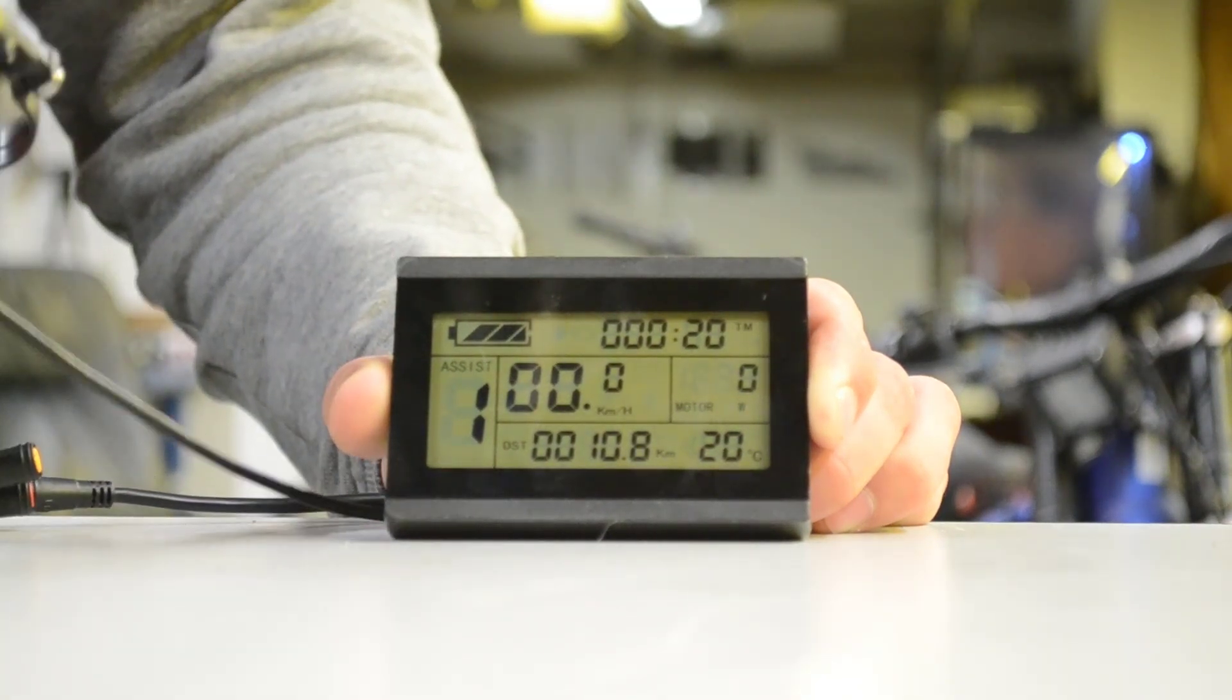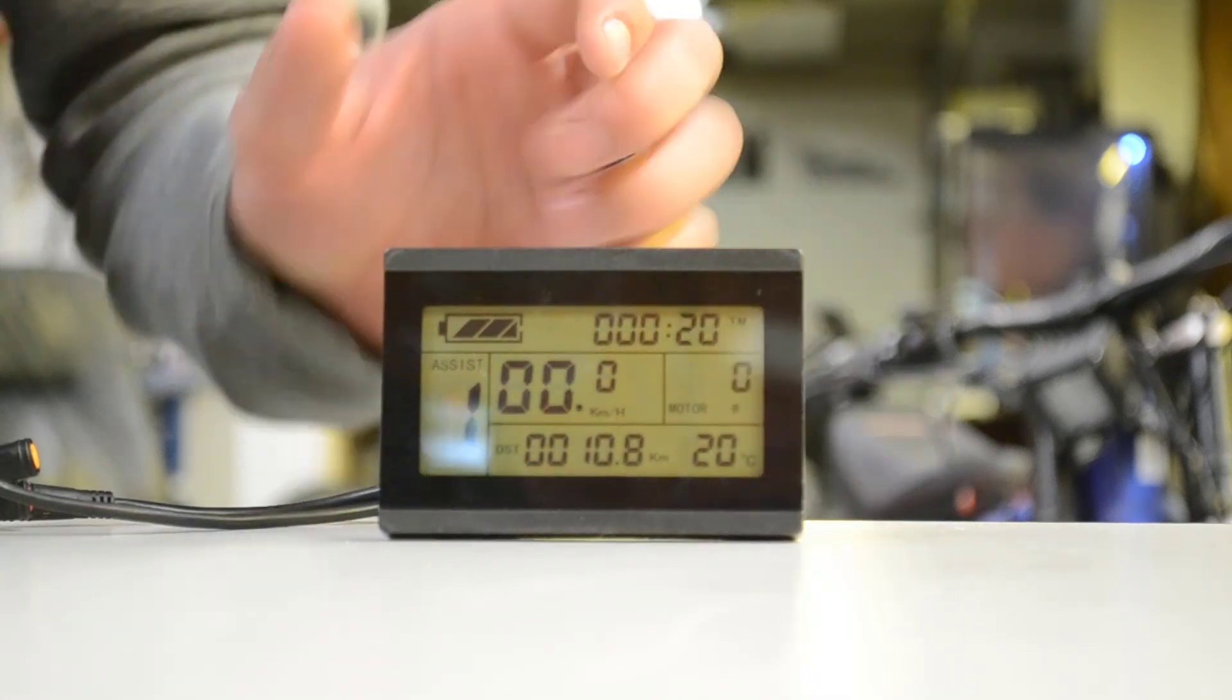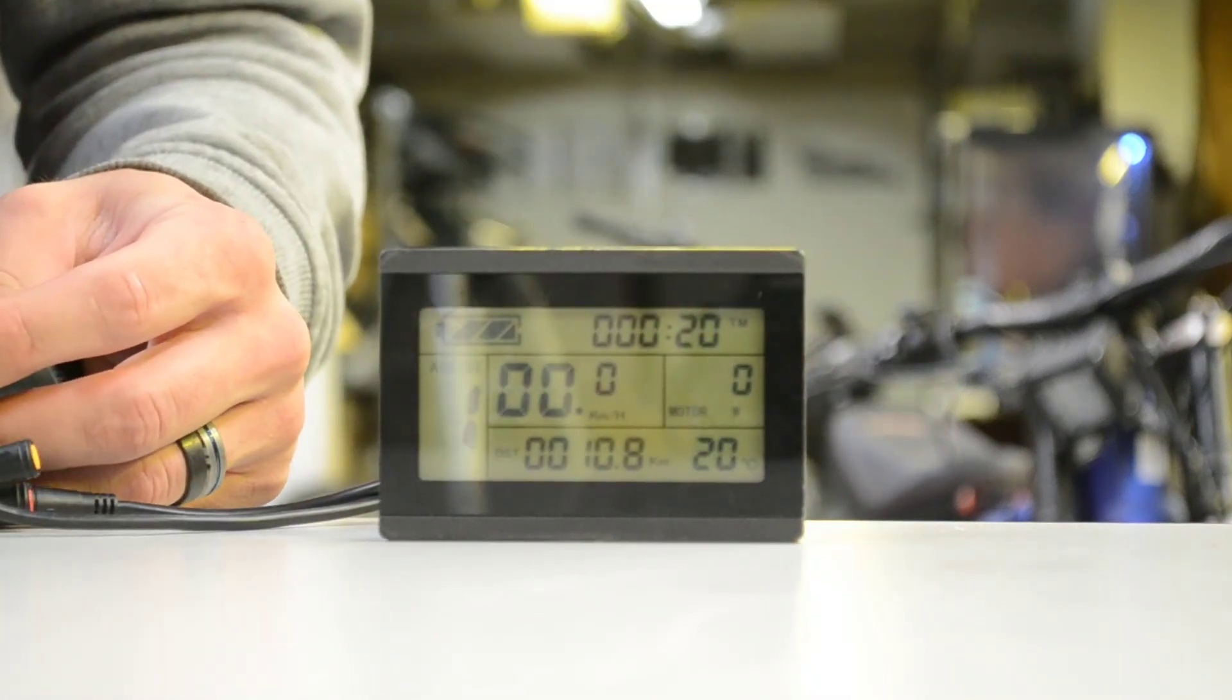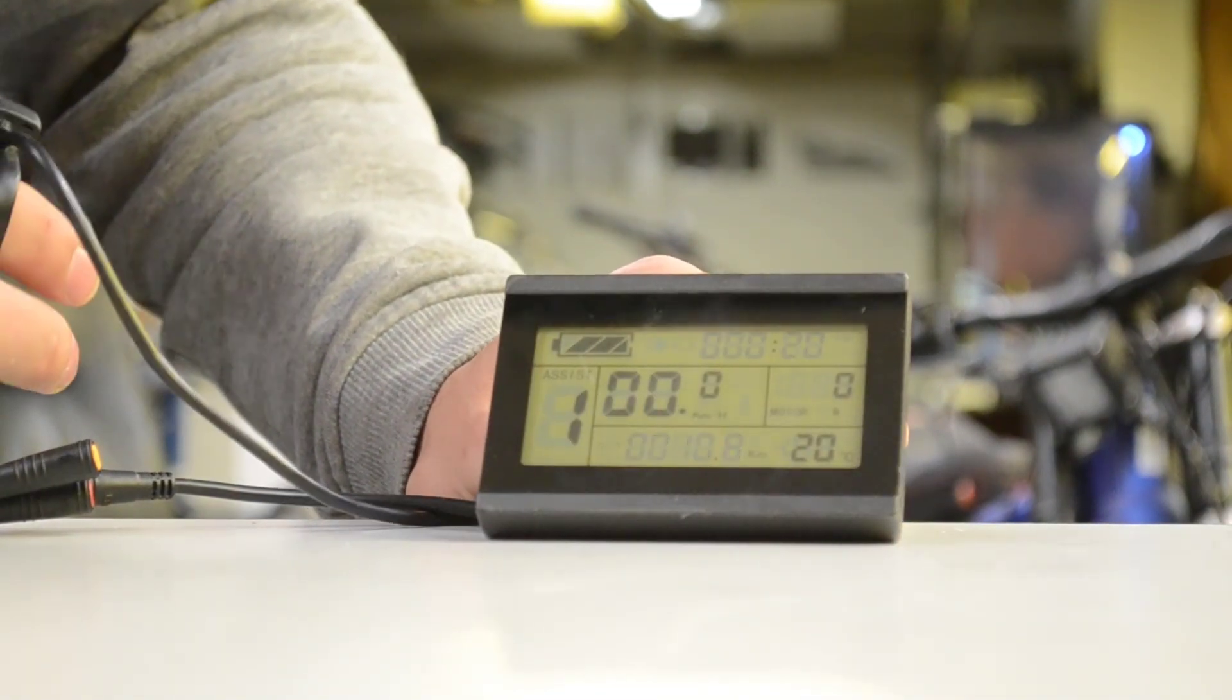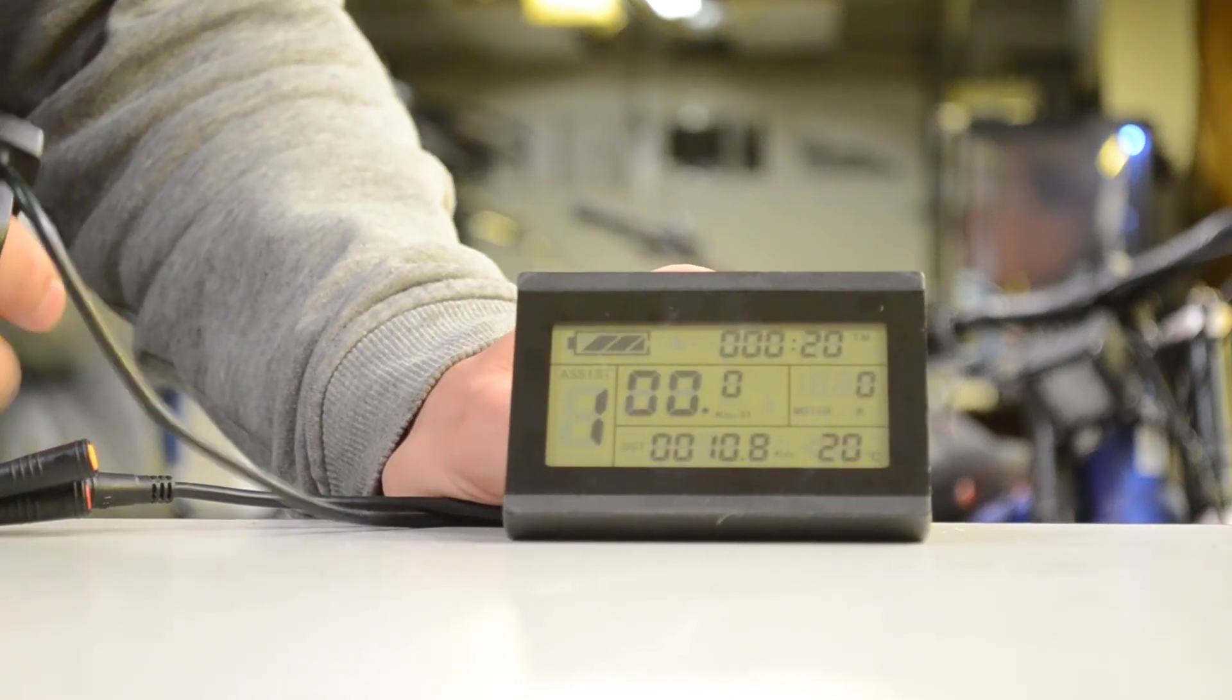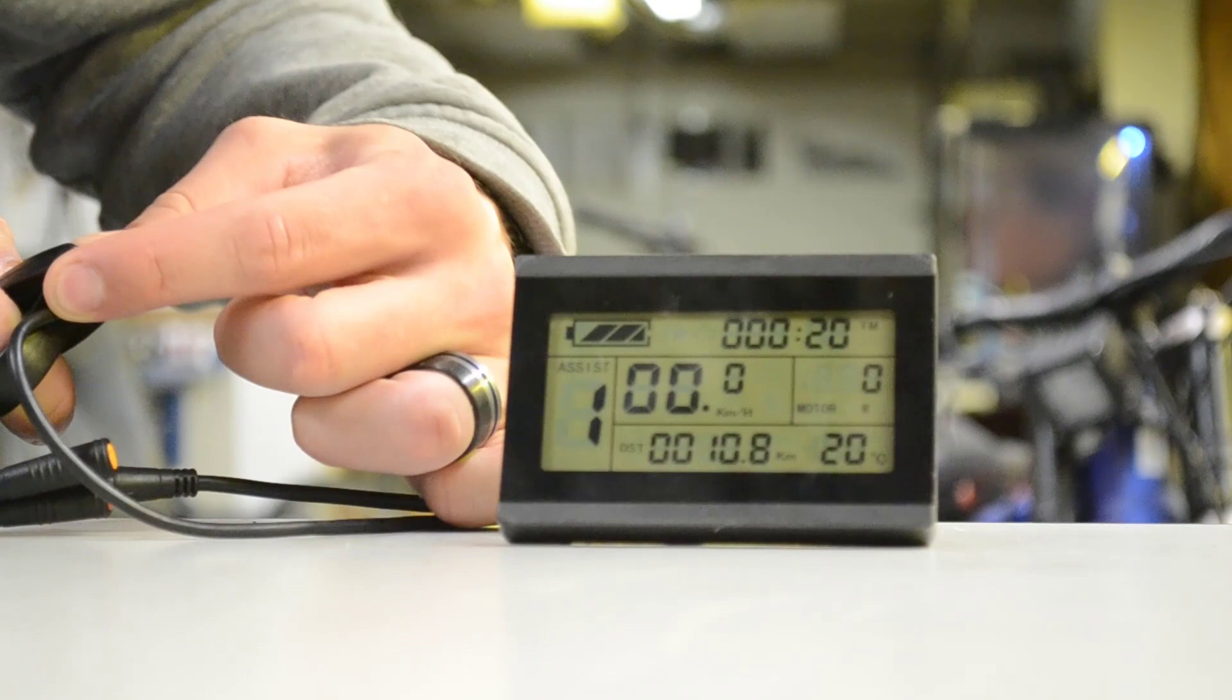And first things first, when we turn it on, we want to press up and down together. And that's going to bring us into our programming menu. So, if you have the display on for more than 10 seconds, when you press and hold up and down, you're going to be able to reset your trip meter.